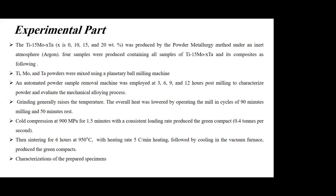Then cold pressing at 900 MPa for 1.5 minutes with a loading rate produced the green compact at 0.4 tons per second. Then sintering the green compact for 6 hours at 950°C with a heating rate of 5°C per minute, followed by cooling in a vacuum furnace. Finally, we proceeded to the characterization of the prepared specimens.